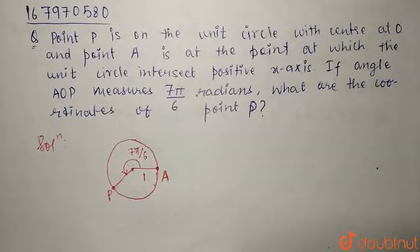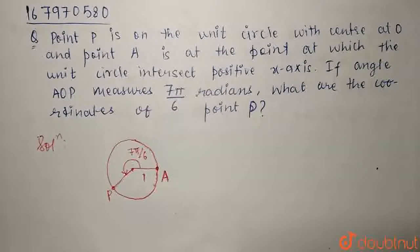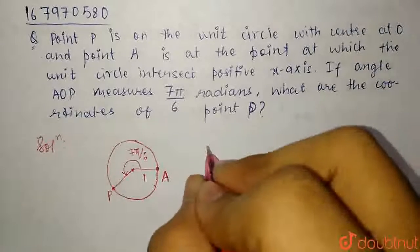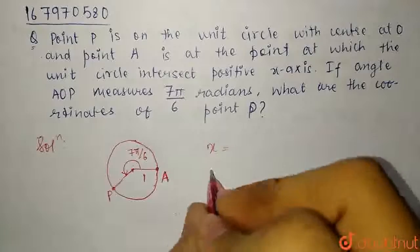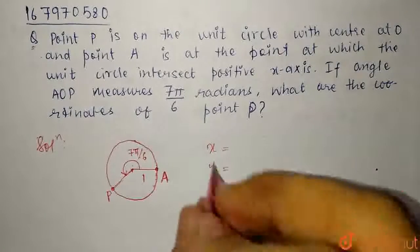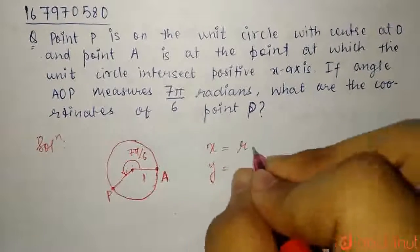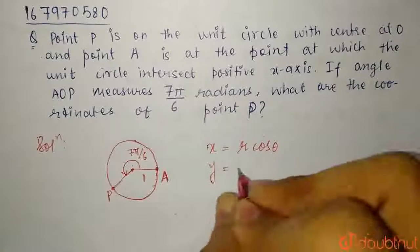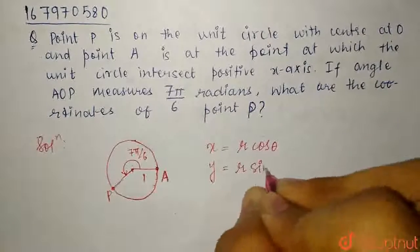In polar coordinates, we have rectangular coordinates as R cos theta and R sin theta.